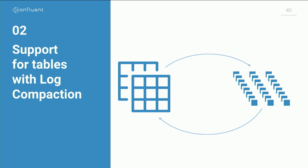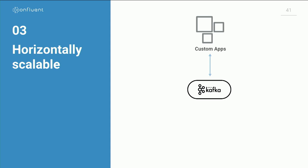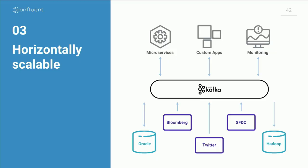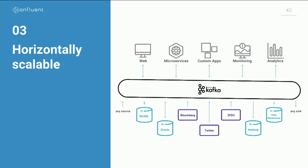Kafka has also been built to be horizontally scalable. The reason this is important is not just because there are really big applications with massive data streams — like some IoT applications — but because it can grow from a platform that supports one application to something that supports many. It can do this gradually: one application brings its data streams, other applications come to get them, and it happens organically. This can grow until it's really used across the company as the central nervous system that all these things plug into. The ability to do this bit by bit is incredibly important — no system gets rebuilt all at once.